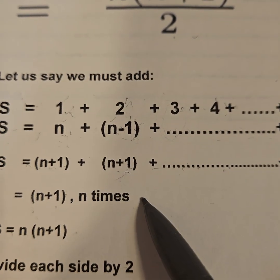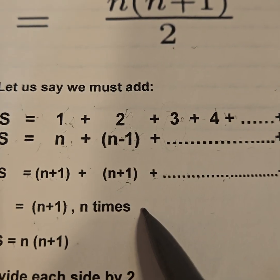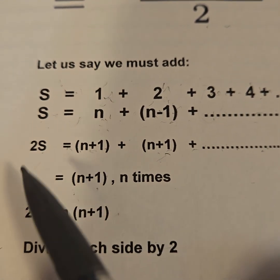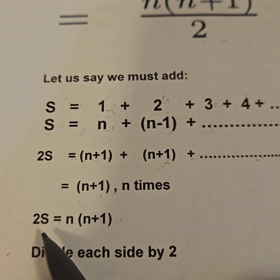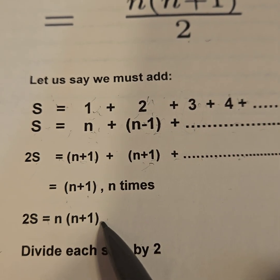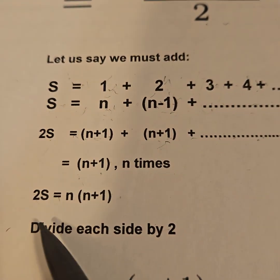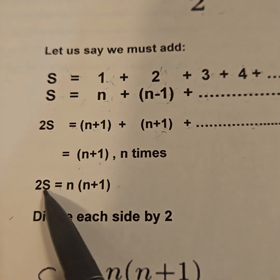Now as an equation, that means n times (n+1). So 2S equals n times (n+1). We have an equal sign, so I'm going to divide each side by 2. If left equals right, left divided by 2 equals right divided by 2.